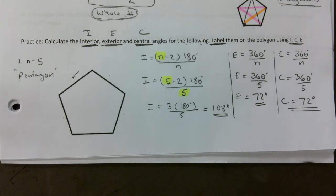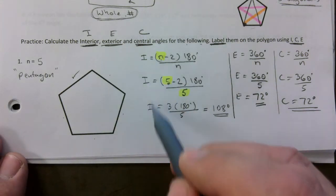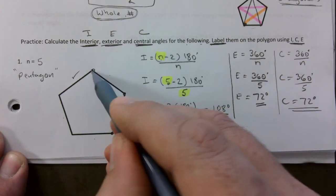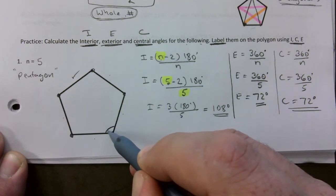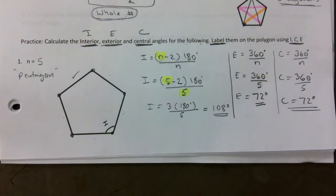You found the interior, exterior, and central, but you need to know where they are on the diagram — it might be worth a full mark just to know where they are. There are five corners on a pentagon. At any corner, you can mark one interior angle right there.